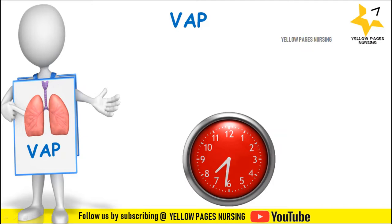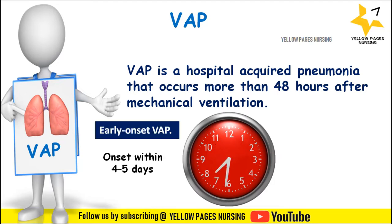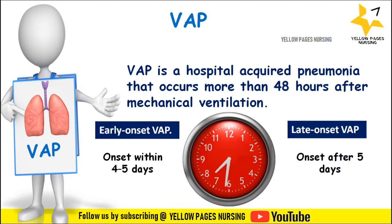What is VAP? Ventilator-associated pneumonia in simple terms is a lung infection that develops in a person who is on a ventilator. Clinically, VAP is defined as a hospital-acquired pneumonia that occurs more than 48 hours after mechanical ventilation. VAP is of two types: early onset VAP and late onset VAP. Onset within four to five days after tracheal intubation is taken to be early onset VAP, and onset after five days is late onset VAP.